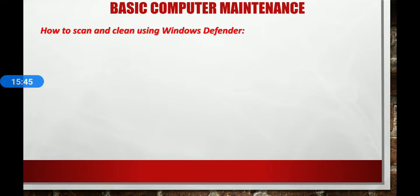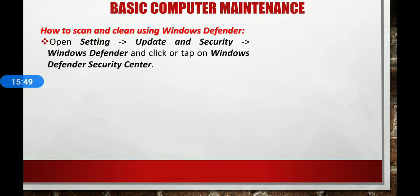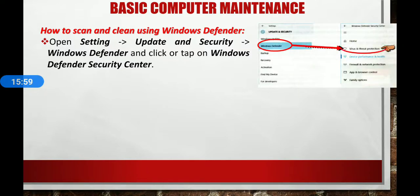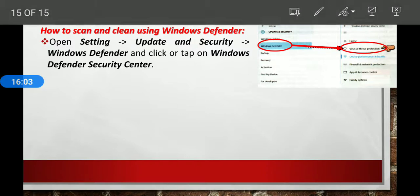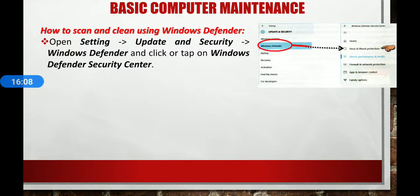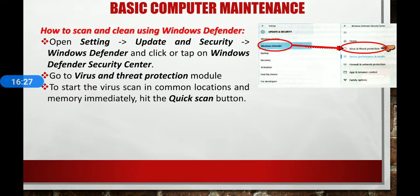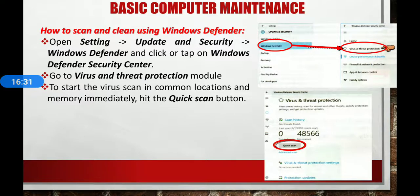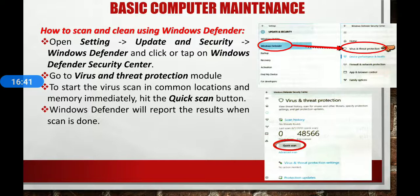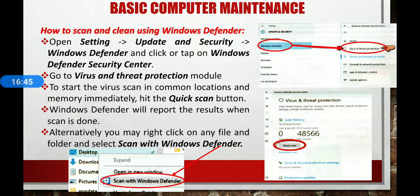Next, how to scan and clean using Windows Defender. First, open Settings and go to Update and Security. Then go to Windows Defender and click on Windows Defender Security Center. Then go to the Virus and Threat Protection module. To start a virus scan in common locations and memory immediately, hit the Quick Scan button. Windows Defender will report the results when the scan is done. Alternatively, you may right-click on any file or folder and select 'Scan with Windows Defender'.